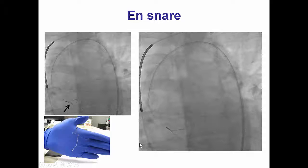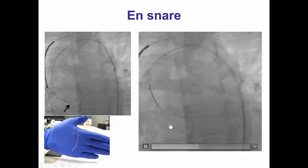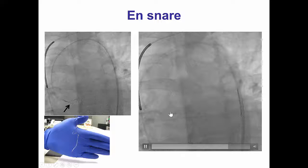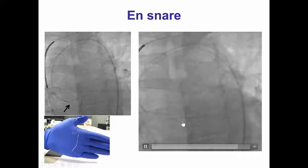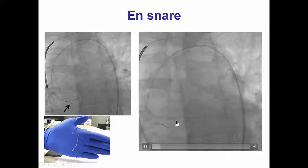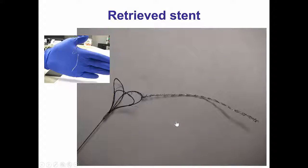We then used a three-loop snare, and fortunately we were able to grasp the front end of the stent and remove it. And that's what came out — the stent is highly deformed but has been successfully retrieved.